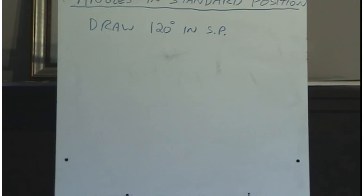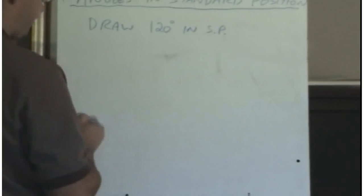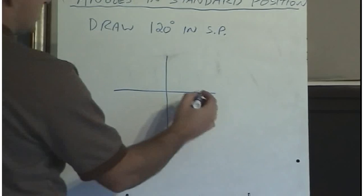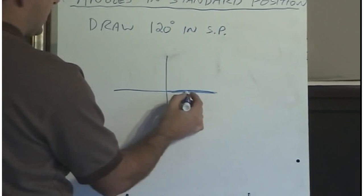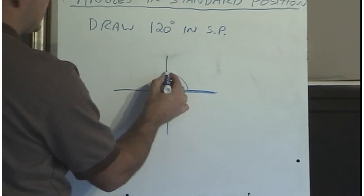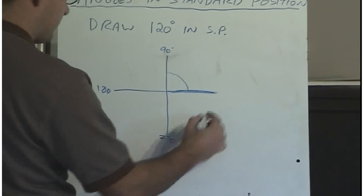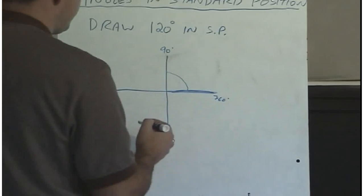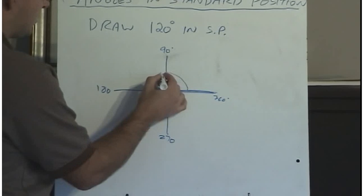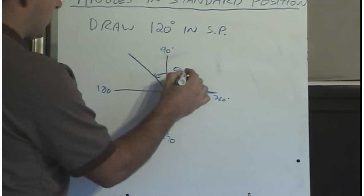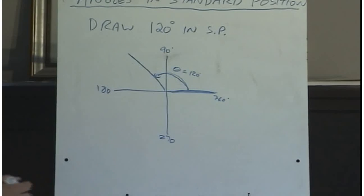Let's consider this example: draw the angle 120 degrees in standard position. 120 degrees is positive, so I'm starting from the initial arm. This is 90 degrees, this is 180 degrees, 270 degrees, 360 degrees. 120 degrees would be somewhere about here — in quadrant 2. So theta equals 120 degrees in standard position.